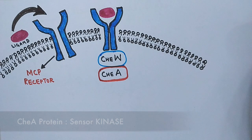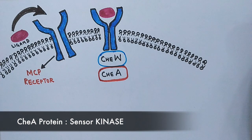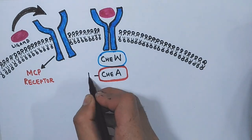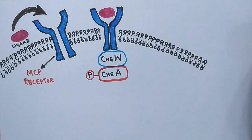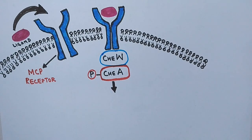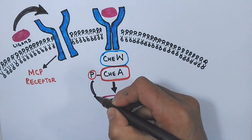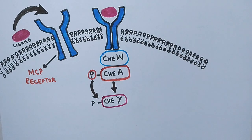The CheA shows kinase activity and autophosphorylates itself on histidine residues. After the autophosphorylation of CheA protein, the CheA protein activates the CheY protein by transferring the phosphate to the aspartate residue of CheY.